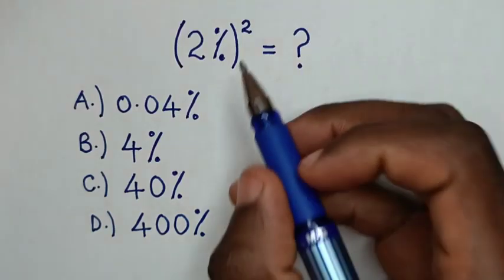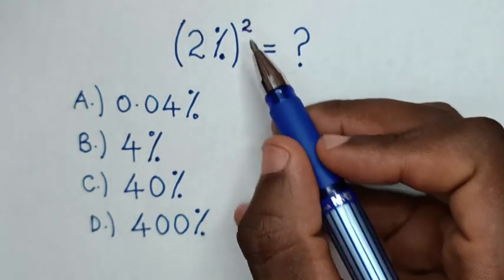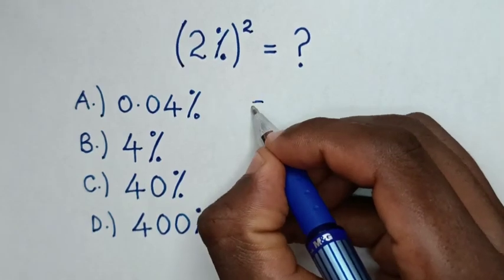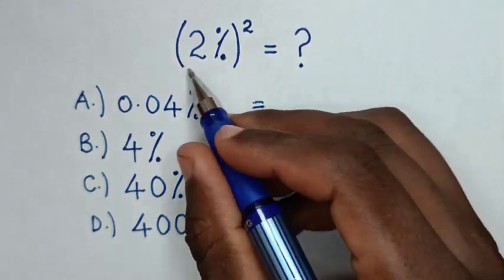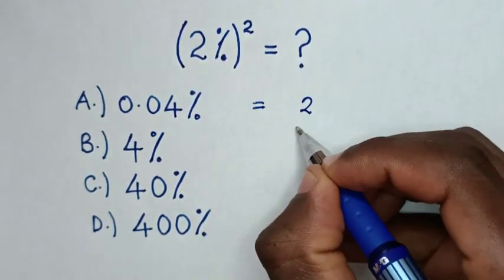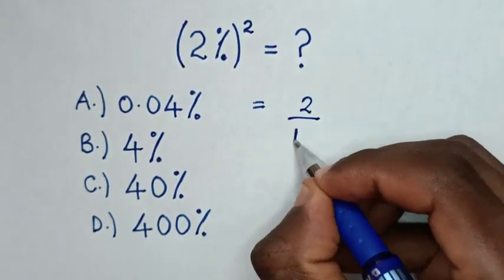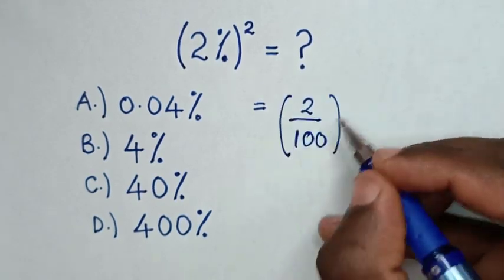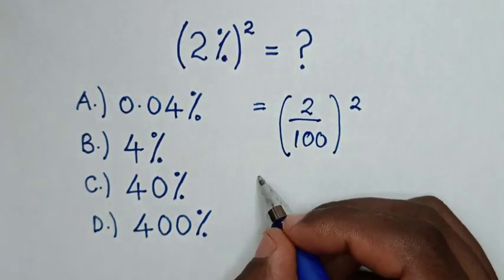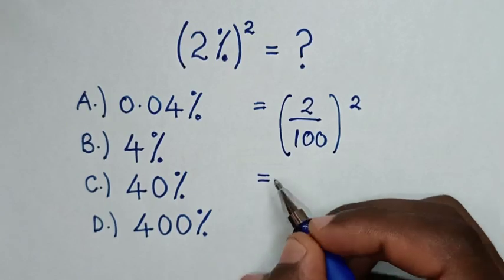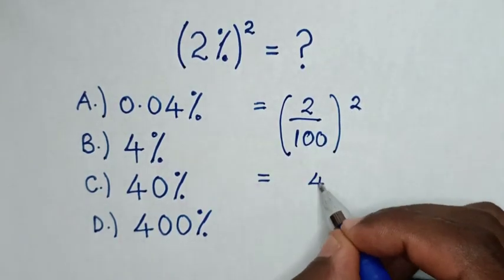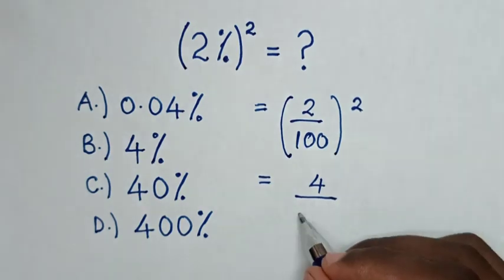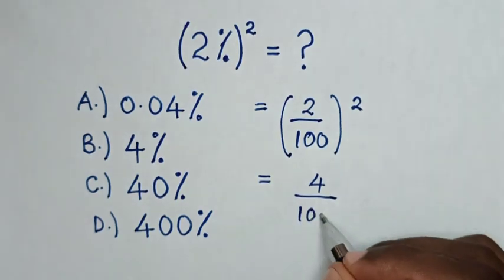Hello, what is the square of 2%? So it will be equal to: 2% is the same as 2 over 100, then bracket squared. Then it will be equal to 2 squared is the same as 4, over 100 squared is the same as 10,000.